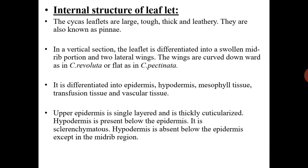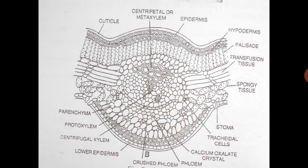The upper epidermis is single-layered and thickly cuticularized. Hypodermis is present below the upper epidermis but is absent in the wing regions — it is present only in the midrib region. In the wing region, two epidermal layers are present: upper and lower. In the diagram of the leaflet, you can see the cuticle, upper and lower epidermal cells, and stomata in the lower epidermal cells. The tissue between them includes hypodermal tissues, and there are two types: palisade parenchyma tissues and spongy parenchyma tissues. The central region of the wings consists of transfusion tissues.